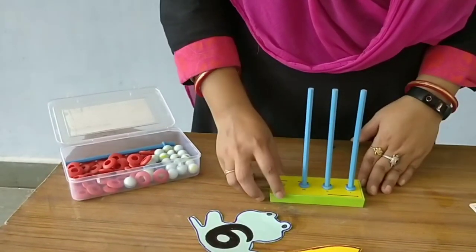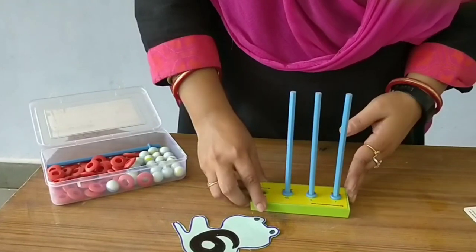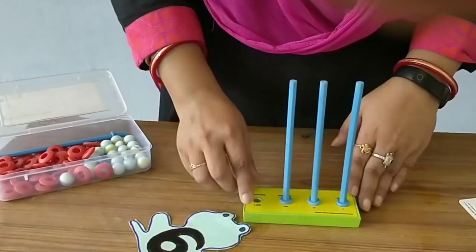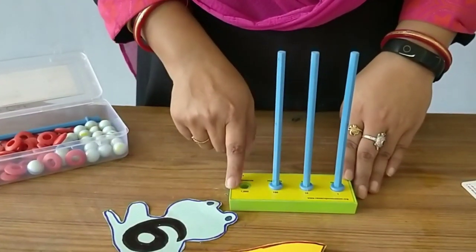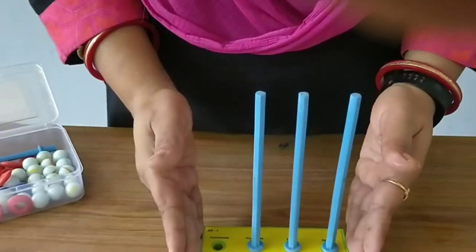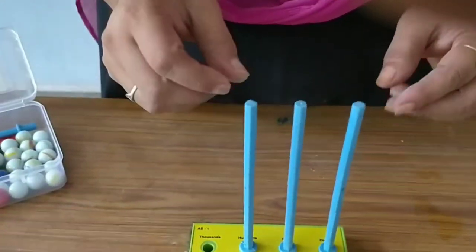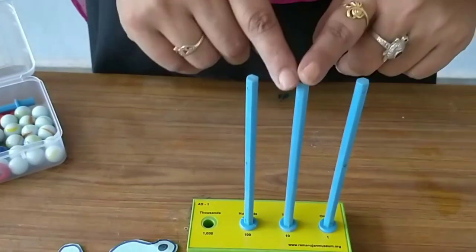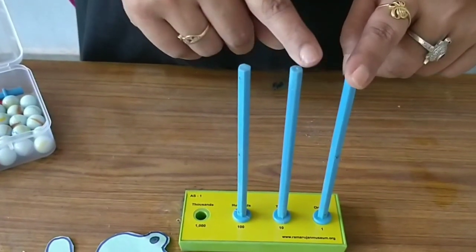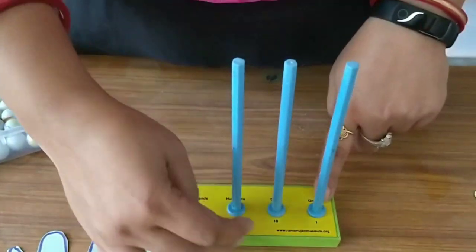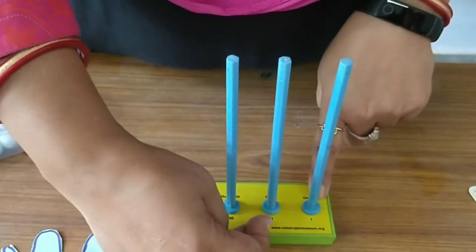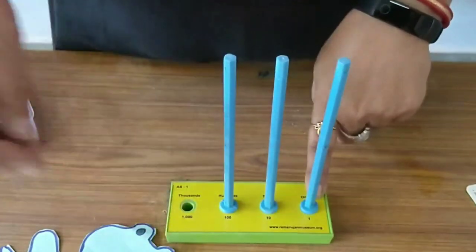Now, we will do another activity. So, this is the abacus. You can make this abacus also at home. Take a toothpaste box and take some sticks. You can put them on that box and write the ones, tens and hundreds.